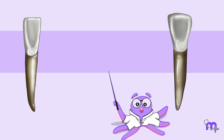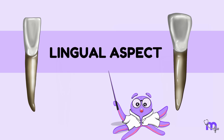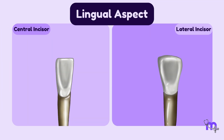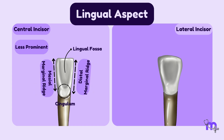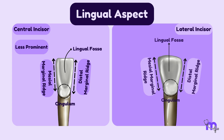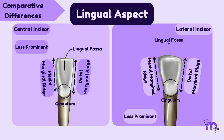Let's rotate both the teeth to view them from the lingual aspect. We observe that both exhibit relatively less prominent features, such as lingual fossa, cingulum, and marginal ridges. However, it's worth noting that these features are less pronounced on the lateral incisor, which is a comparative difference.